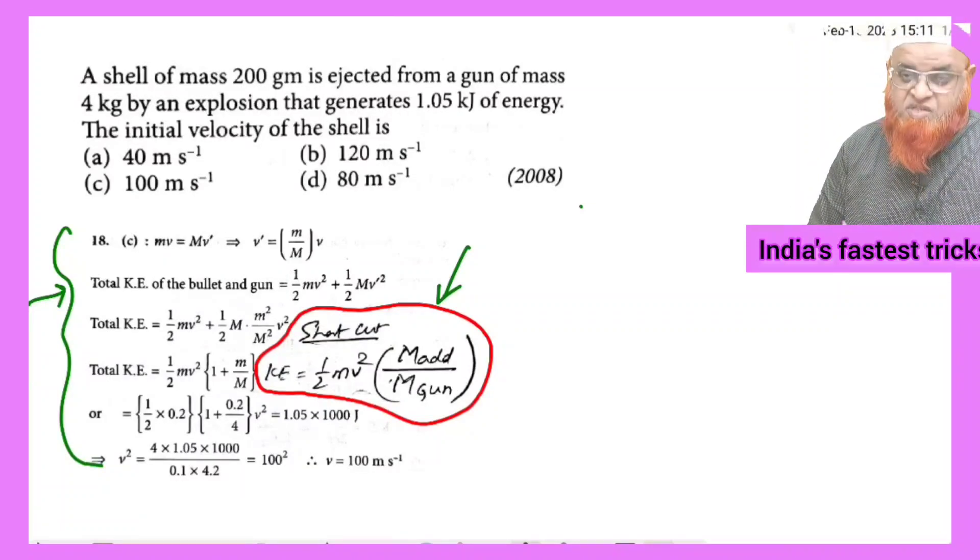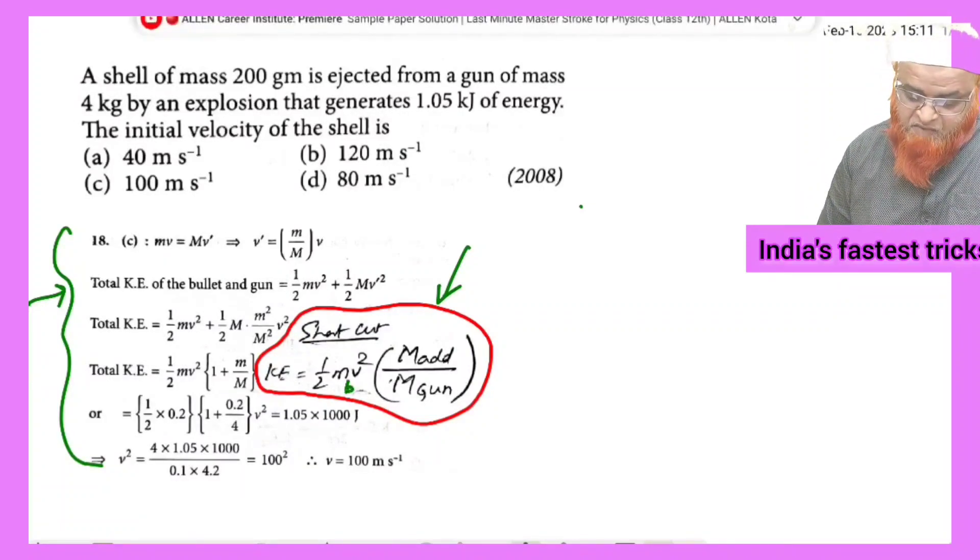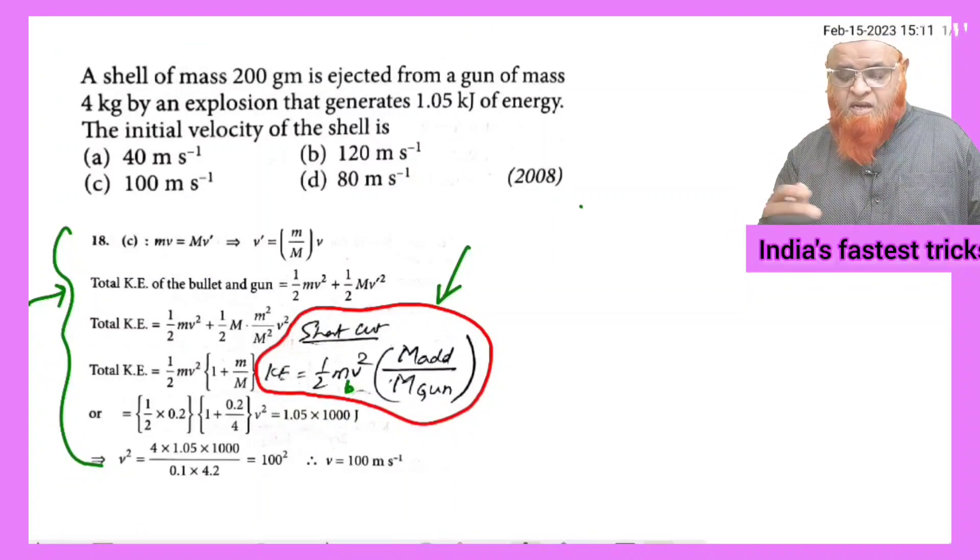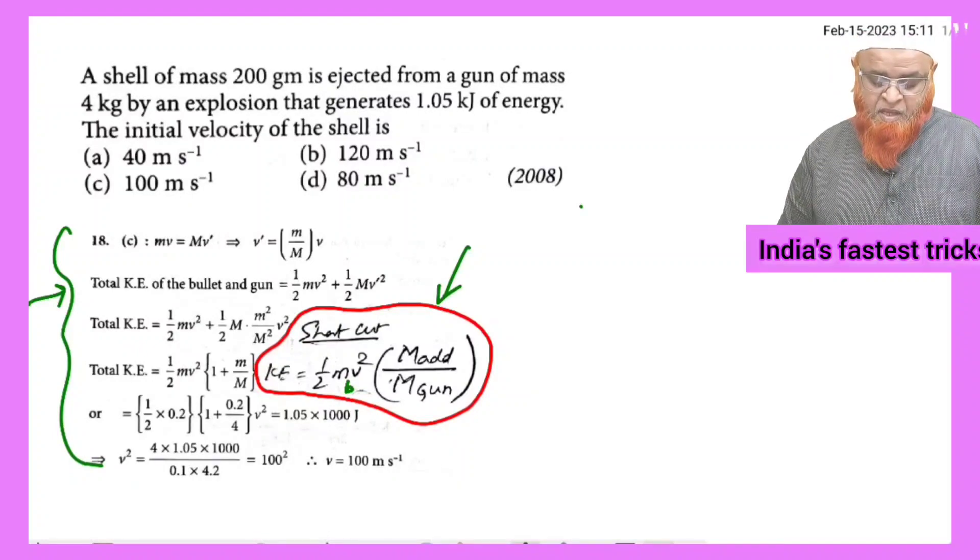The shortcut is kinetic energy, which is half m v squared, mass of the bullet into v squared by mass. Addition means mass of the gun plus mass of the bullet by mass of the gun.